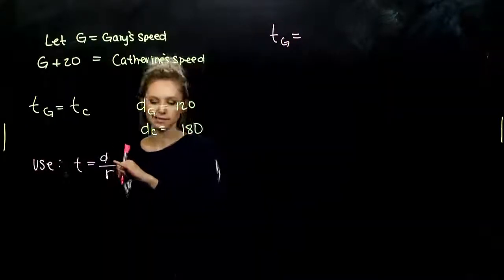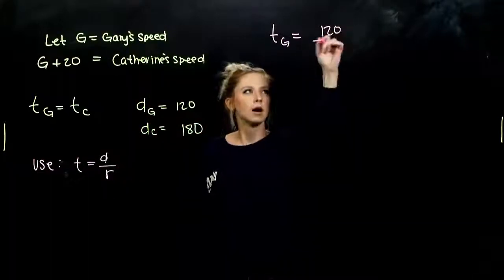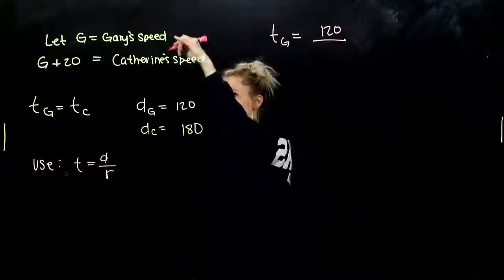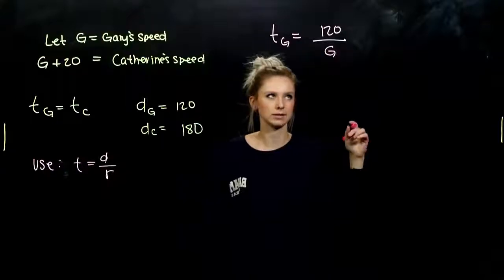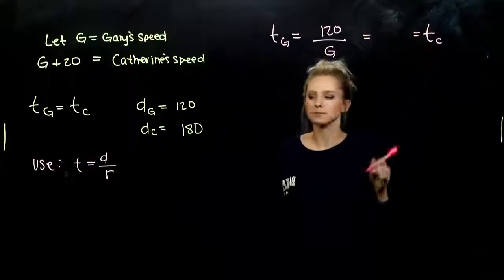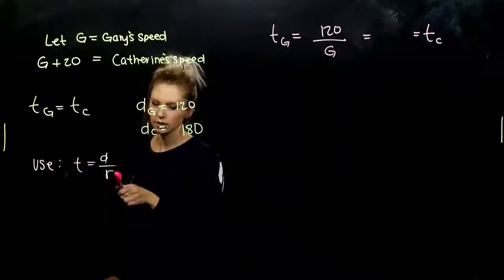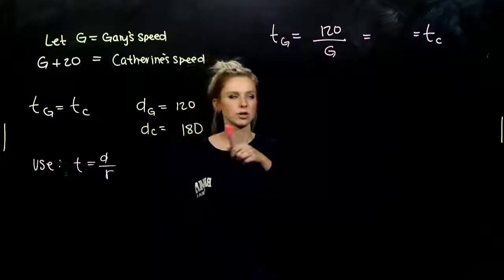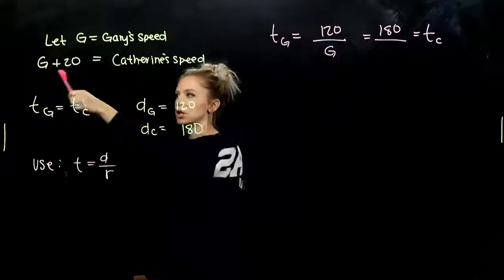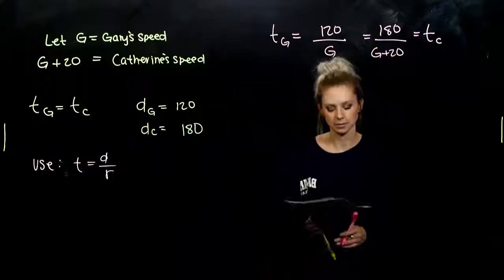How do we build Gary's time? His distance divided by his rate. So Gary, how far did he go? 120 miles. And how fast was he going? G, miles per hour. We'll deal with units later. And that's equal to Catherine's time. And how do we build hers? Her distance divided by her rate. So she traveled 180. And how fast was she going? G plus 20. Gary plus another 20 miles per hour.